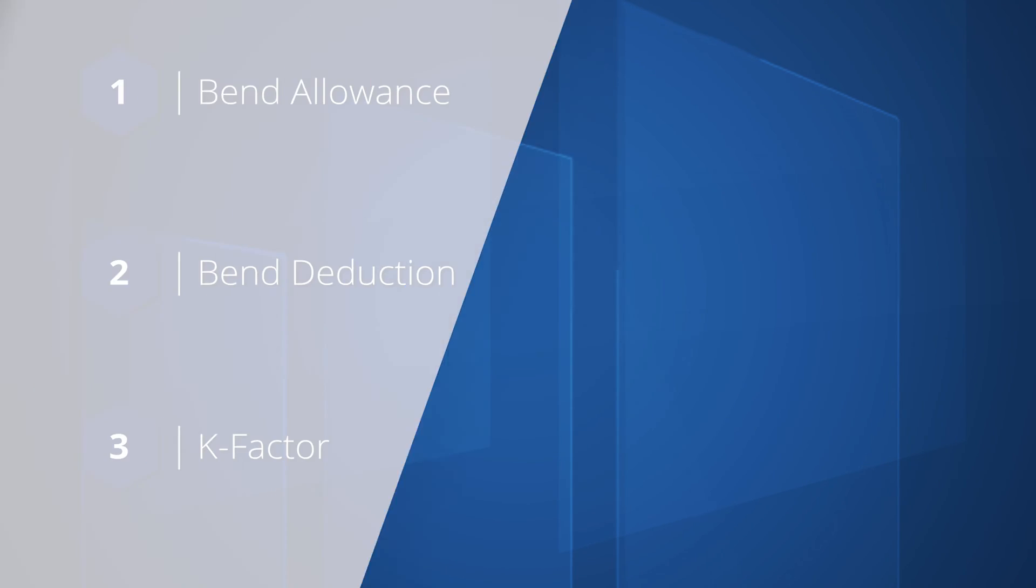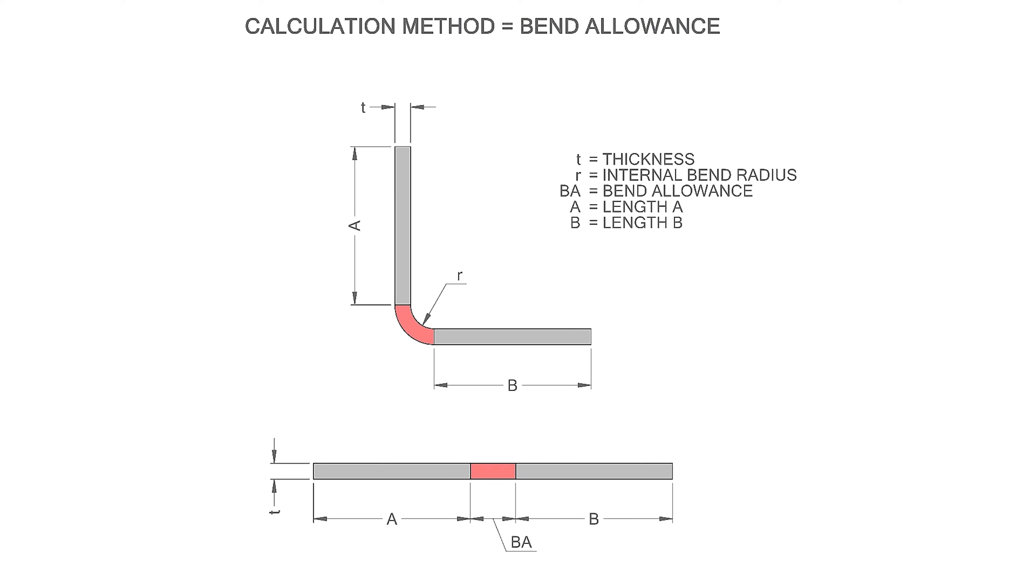The bend allowance calculation uses the sum of the straight lengths A and B, excluding the bend region, then adds the bend allowance value specified by the user.